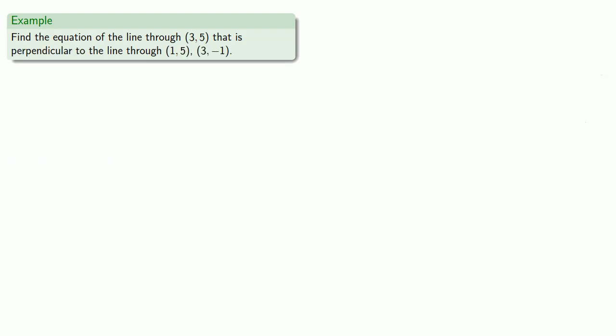So here we have a bunch of points. The problem is only one of them is actually on our line. The other two tell us something about the slope, but not about the slope of the line that we're trying to write the equation for. But we do know that we want the line to be perpendicular to another line.